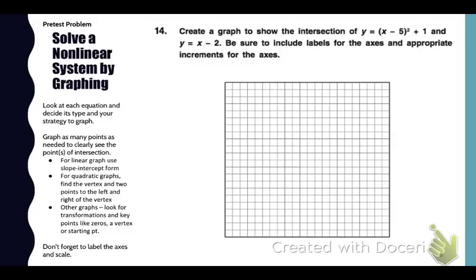You want to look at each equation that you need to graph and decide its type and your strategy to graph it. Graph as many points as needed to clearly see the points of intersection. For linear graphs use slope intercept. For quadratic find the vertex and two points. For other graphs look for transformations and key points like zeros. Do not forget to label the axes and the scale.